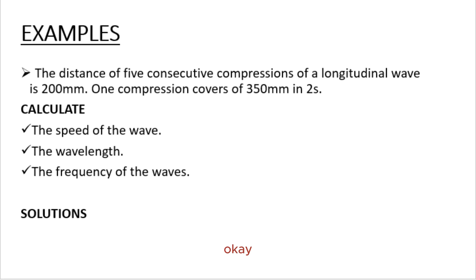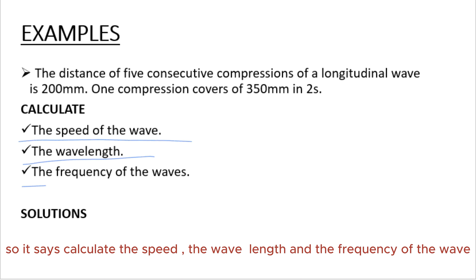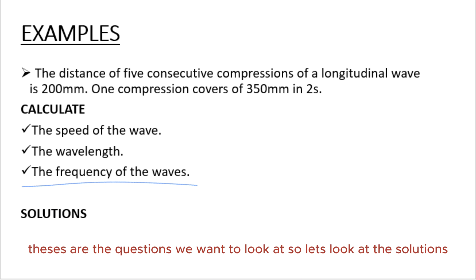Now let's look at an example. The distance of five consecutive compressions of a longitudinal wave is 200mm. One compression covers a distance of 350mm in 2 seconds. Calculate the speed, the wavelength, and the frequency of the wave. These are the questions we want to look at. So let's look at the solutions. How do we find speed?